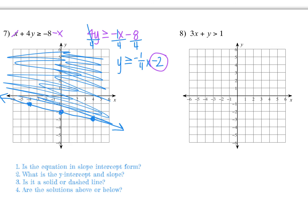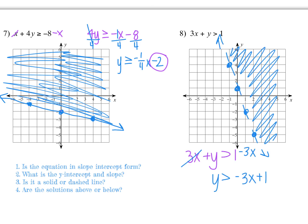Pause and try example eight on your own using the guiding questions. When you solve for y, you should get y > -3x + 1. The y-intercept is one, slope is fall three, run one. It's strictly greater than — not greater than or equal to — so it's a dashed boundary line. For this steeper line, put your pencil on the y-intercept and shade above for everything greater than.